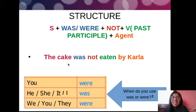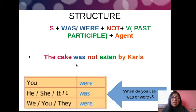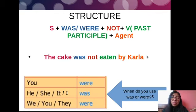For the negative form, the structure is: subject + was/were + not + verb in past participle + agent. For example: 'The cake was not eaten by Carla.' Almost the same structure as the affirmative sentence — the only addition is 'not.' Casi es la misma estructura que la oración afirmativa; lo único que añadimos es el 'not.' Si tiene el agente lo puede poner; si no, no importa.